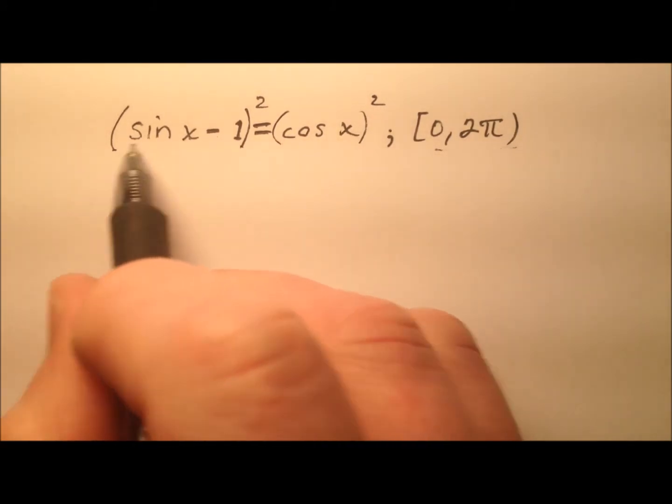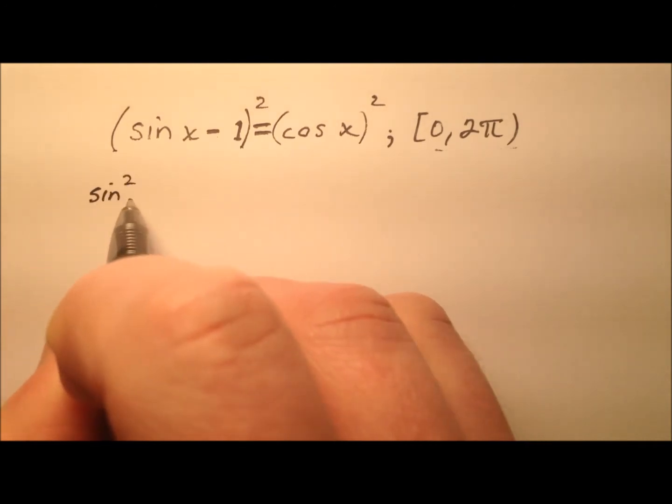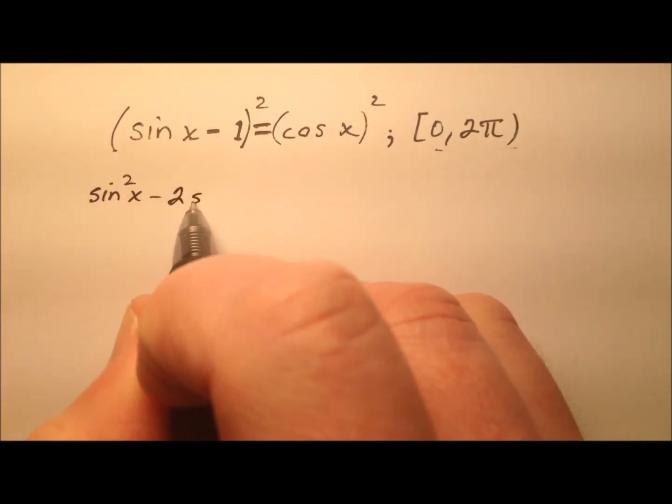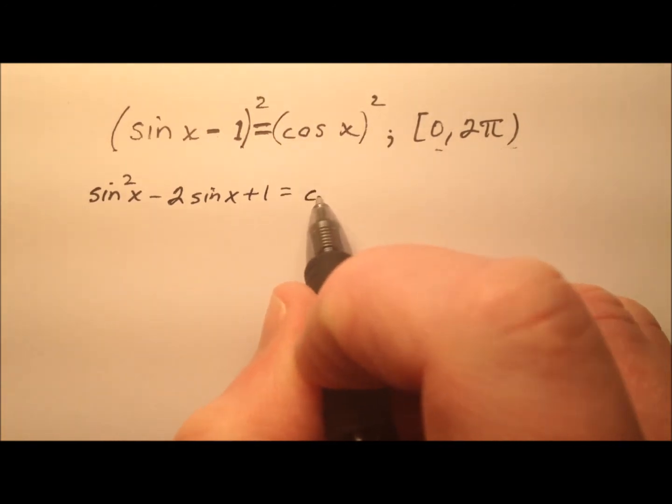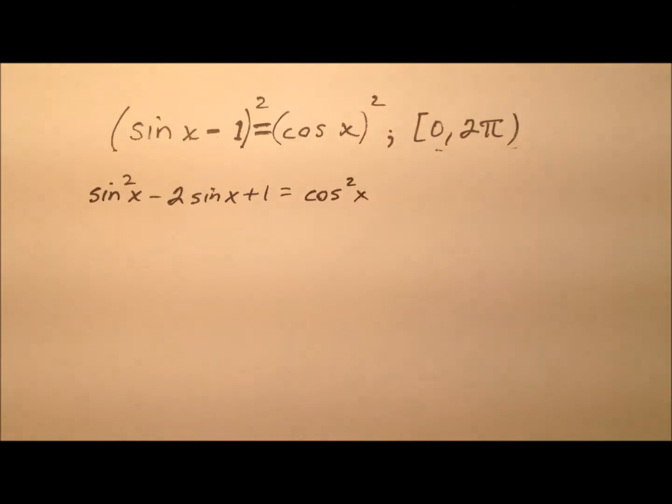So when we do that, this left side becomes sine squared x minus 2 sine x plus 1, and the right side becomes cosine squared x.